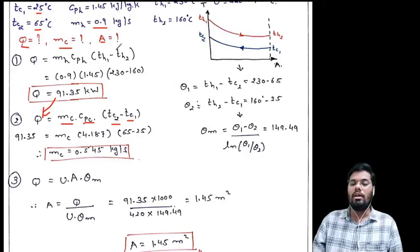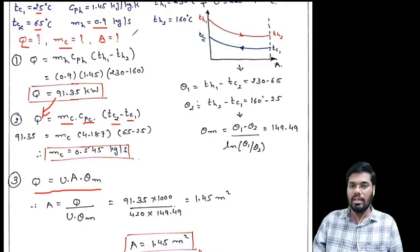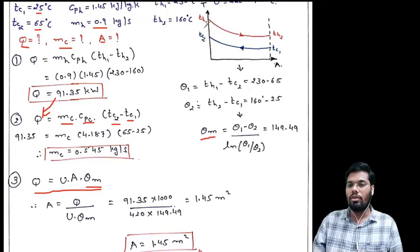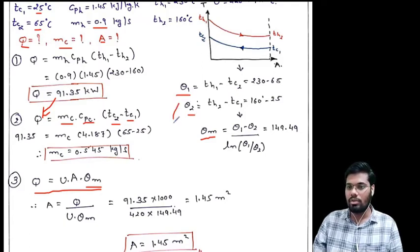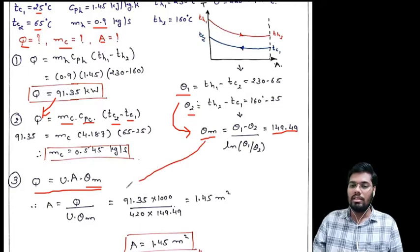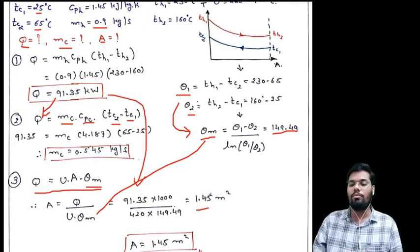For the surface area A, we use Q = U·A·θm, so A = Q / (U·θm). For counter flow, θ1 = TH1 - TC2 = 230 - 65 = 165°C and θ2 = TH2 - TC1 = 160 - 25 = 135°C. Putting θ1 and θ2 into the LMTD equation gives θm = 149.49°C. With U = 420 W/m²·°C and Q = 91.35 kW, the surface area A = 1.45 m².